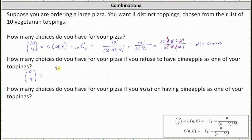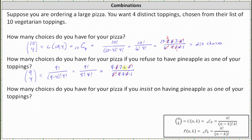9 choose 4 equals 9 factorial divided by the product of 5 factorial and 4 factorial. Expanding: 9 factorial equals 9 times 8 times 7 times 6 times 5 factorial, divided by 5 factorial. Expanding 4 factorial as 4 times 3 times 2 times 1, then simplifying: 5 factorial divided by itself equals 1. Again, 4 times 2 is 8 in the denominator, and 8 divided by 8 simplifies to 1. Also, 6 and 3 share a common factor: one 3 in 3 and two 3s in 6. So 9 times 7 times 2 equals 126 — there are 126 choices.